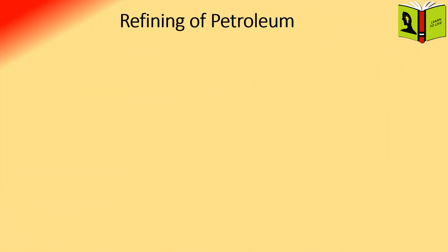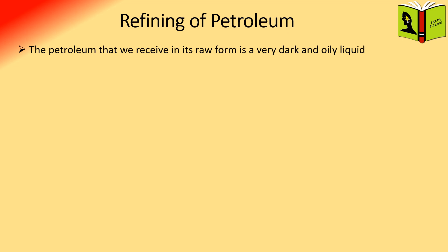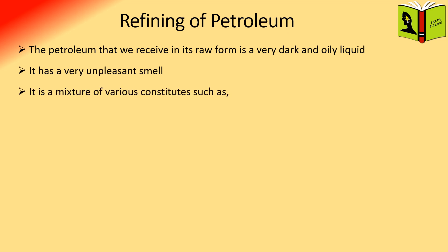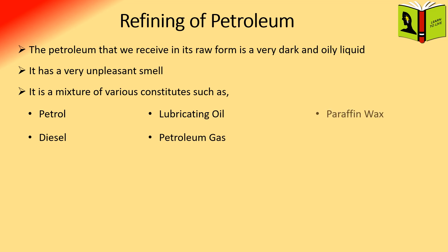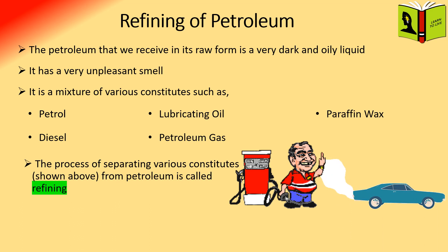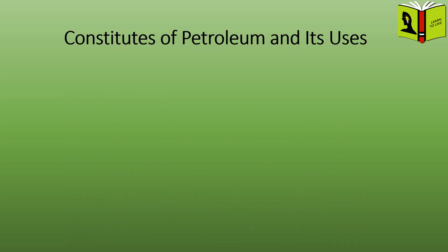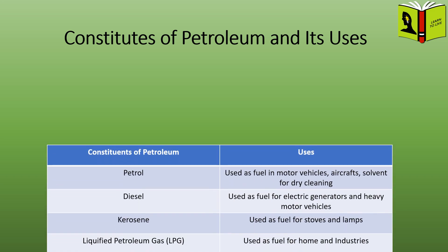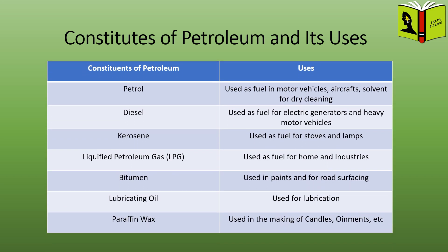Refining of petroleum: the petroleum that we receive in its raw form is a very dark and oily liquid. It has a very unpleasant smell. It is a mixture of various constituents such as petrol, lubricating oil, diesel, petroleum gas, and paraffin wax. The process of separating various constituents from petroleum is called refining. Refining is carried out in petroleum refineries. Please see the table below which shows the constituents of petroleum and their uses.